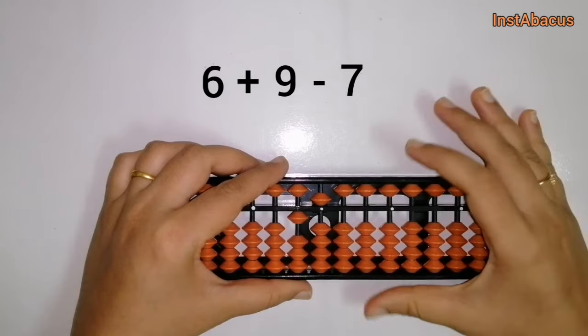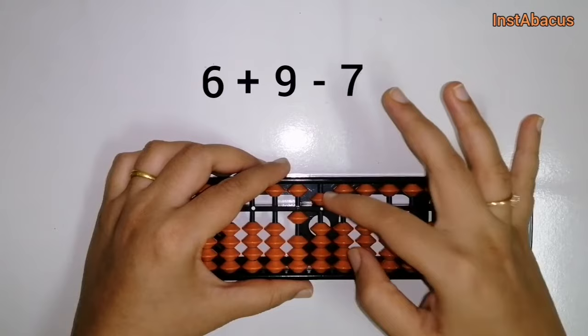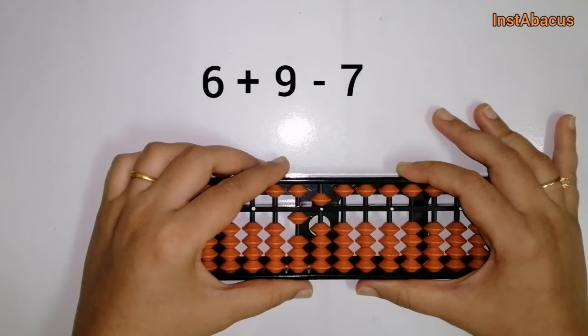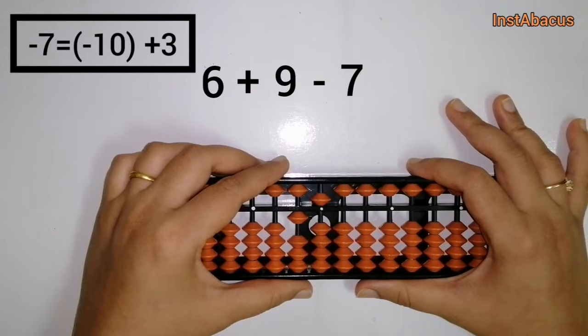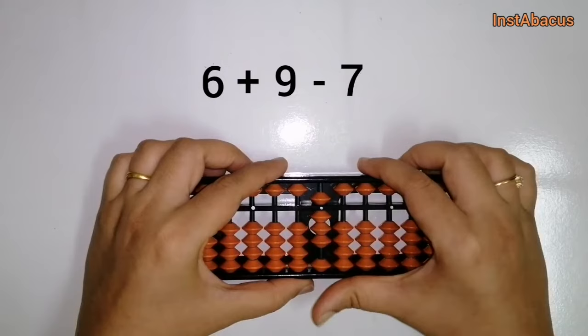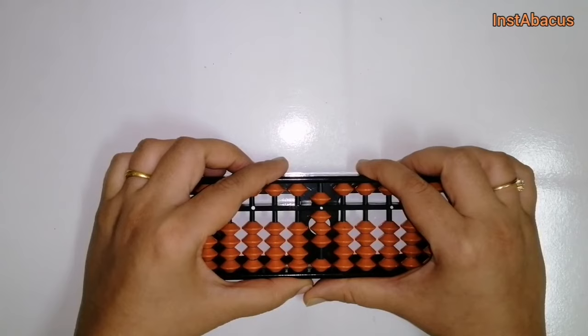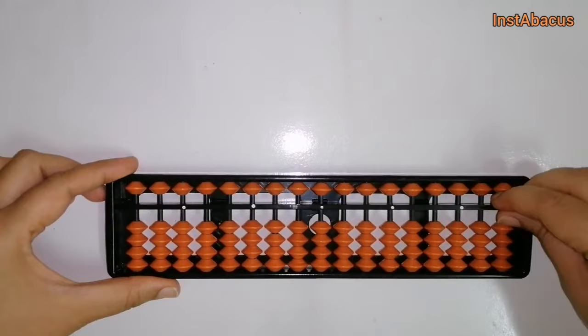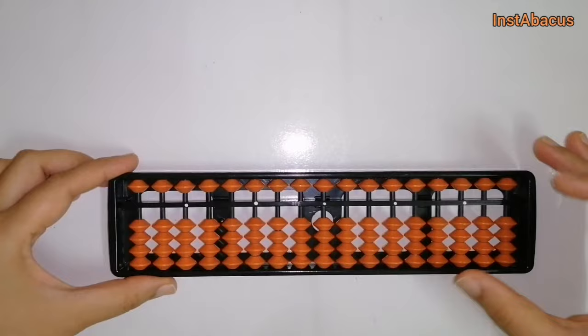Now we have to do minus 7. We cannot subtract 7 directly — we only have a heavenly bead here. So we use our big friends again. The big friend of 7 is 3, so minus 7 is equal to minus 10 plus 3. We do minus 10 plus 3. So 6 plus 9 minus 7 equals 8. Correct!